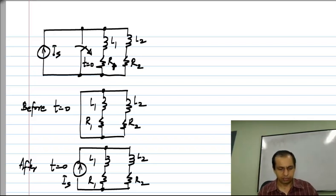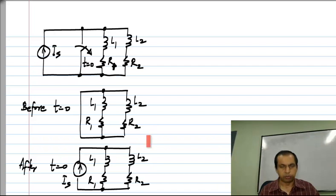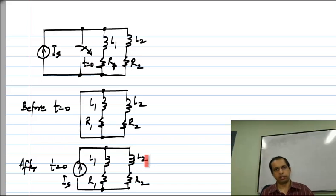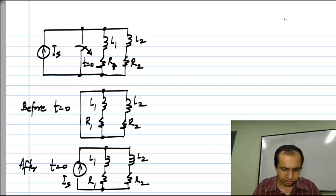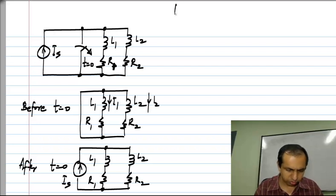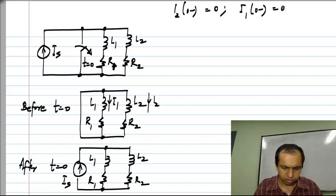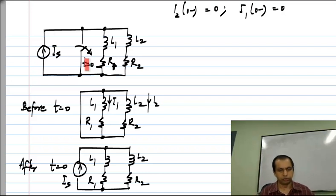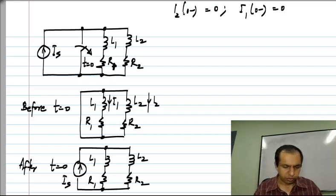The value of the current source is I_S. We want the solution for t greater than 0, given some initial conditions and values of L1 and L2 at t = 0. For simplicity, assume the current through L1 and the current through L2 are both 0 just before the step current is applied. Opening the switch is equivalent to applying a step current to this particular circuit.